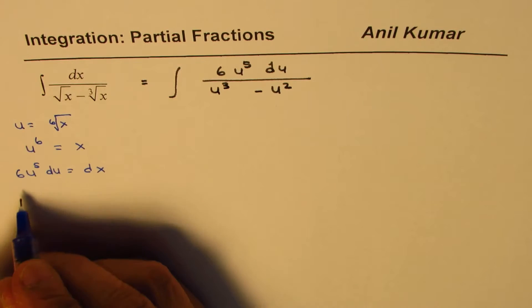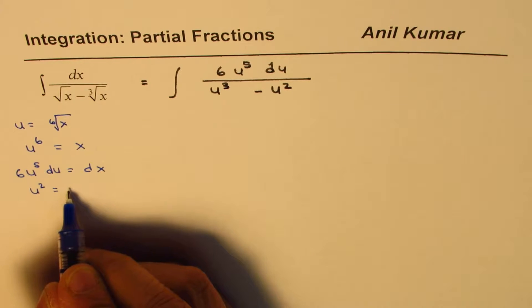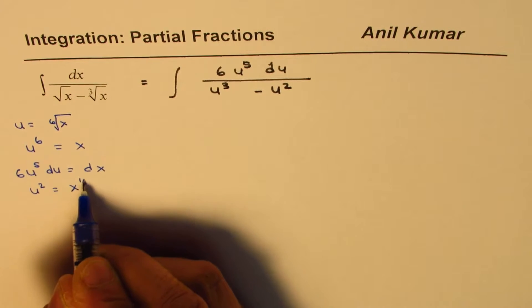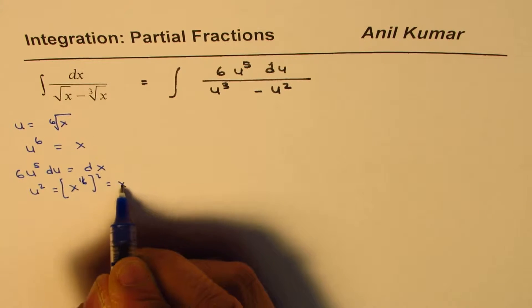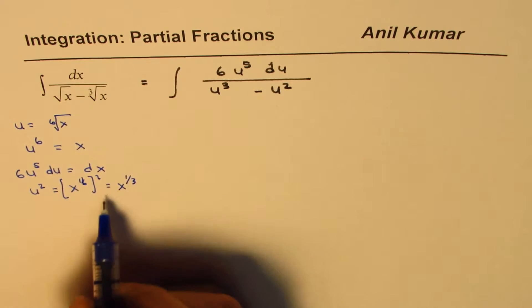If I do u square, I get square of this number, which is x to the power of 1 over 6 square. And that gives you x to the power of 1 over 3 cube root. Do you see that?